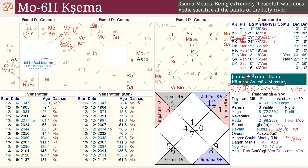Surya and Jupiter are both at 29 degrees something, so there is a Charakaraka replacement. The Atmakaraka Surya will fade away and Jupiter will be the new Atmakaraka. These two Grahas have merged into each other, and Jupiter is now acting as the controller. This whole horoscope is now controlled by Jupiter, who will be both AK and AMK — both Atmakaraka and Amatyakaraka. Such a Jupiter is supremely powerful. This is not a normal soul — this is a soul carrying tremendous knowledge.